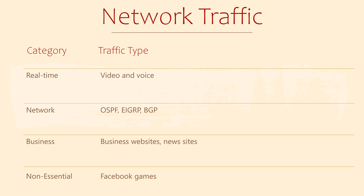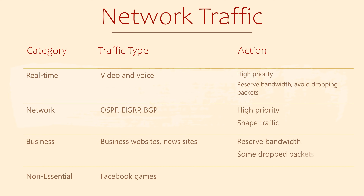For example, we may reserve an amount of bandwidth for real-time traffic. We may also make sure the router forwards these packets first. For other traffic, we use a strategy called shaping. Shaping buffers the forwarding of packets until there is bandwidth available. For other traffic types, we may consider policing — this is where we rate limit the amount of bandwidth these applications have. We'll talk about shaping and policing in the next video.